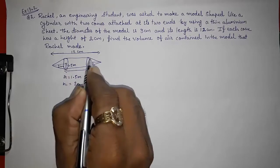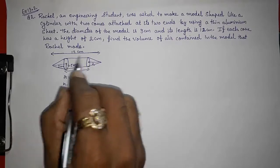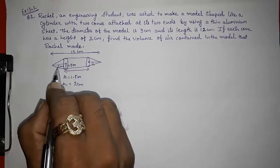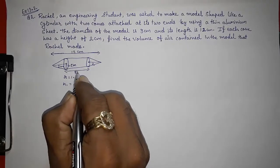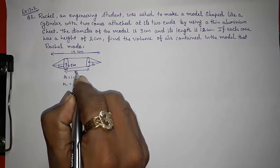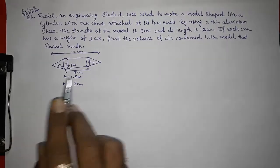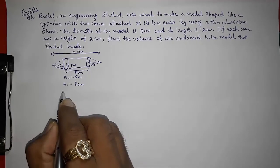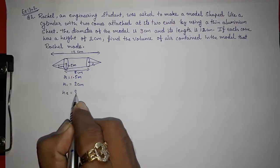Sorry, this cylinder. So height of this cylinder will be 12 minus 2 minus 2 means 12 minus 4. It's 8 cm. Take it as h2, 8 cm.